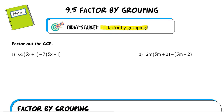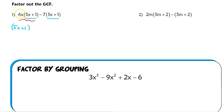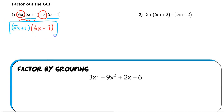I want to review real quick. The first two problems ask us to factor out the GCF. If we have the same exact thing in two terms, that would be our GCF. If we pull out that GCF of 5x plus 1, after factoring it out from the first term I'd have 6x left, and from the second term I'd have negative 7. So 6x minus 7 goes in the other set of parentheses — that's the factored answer.